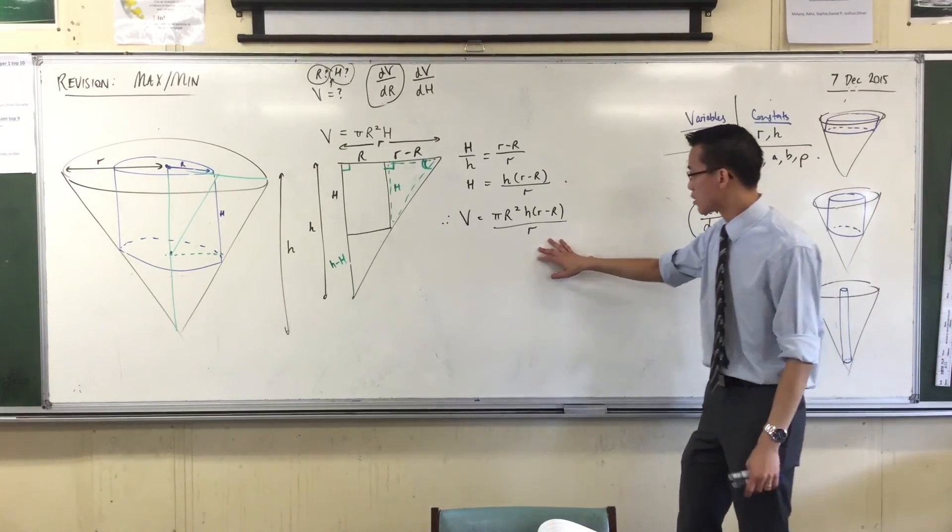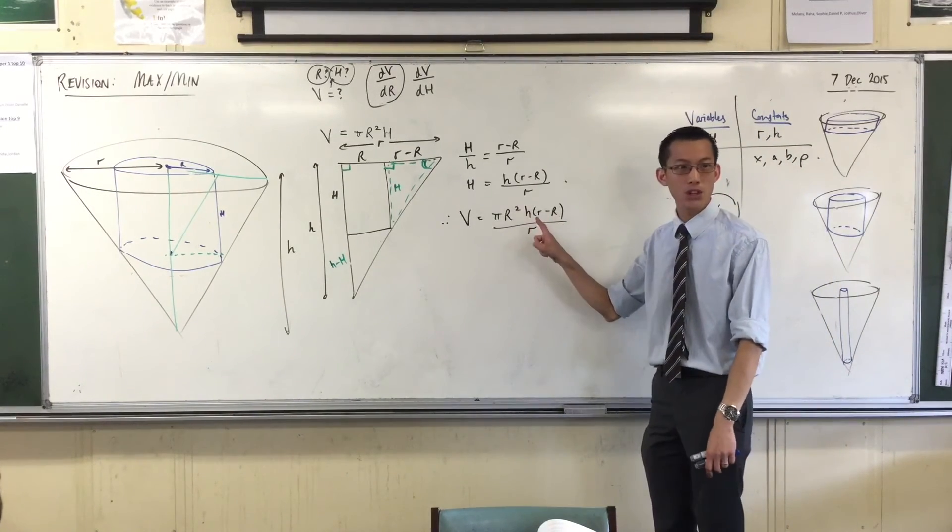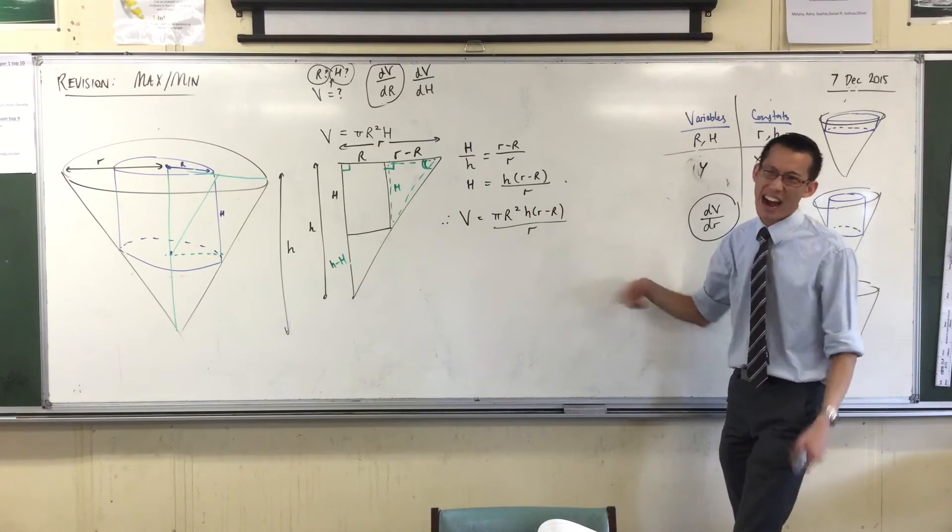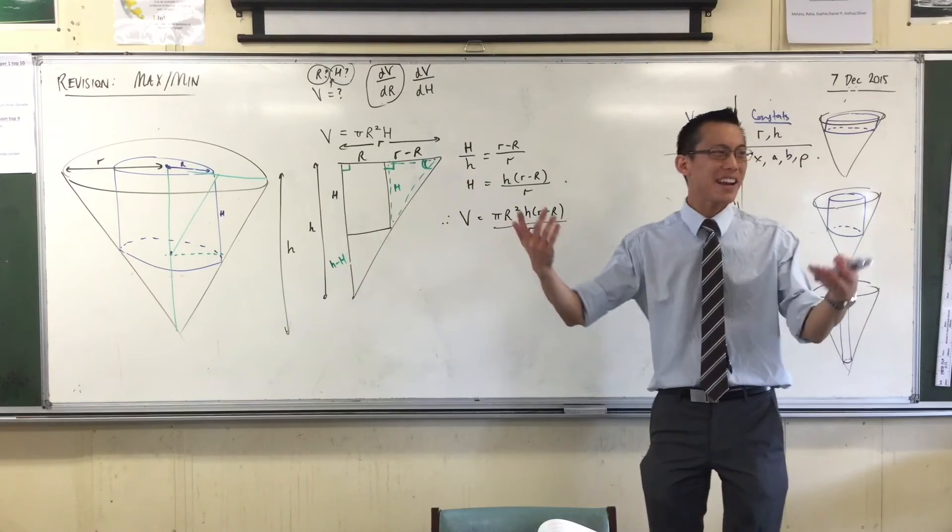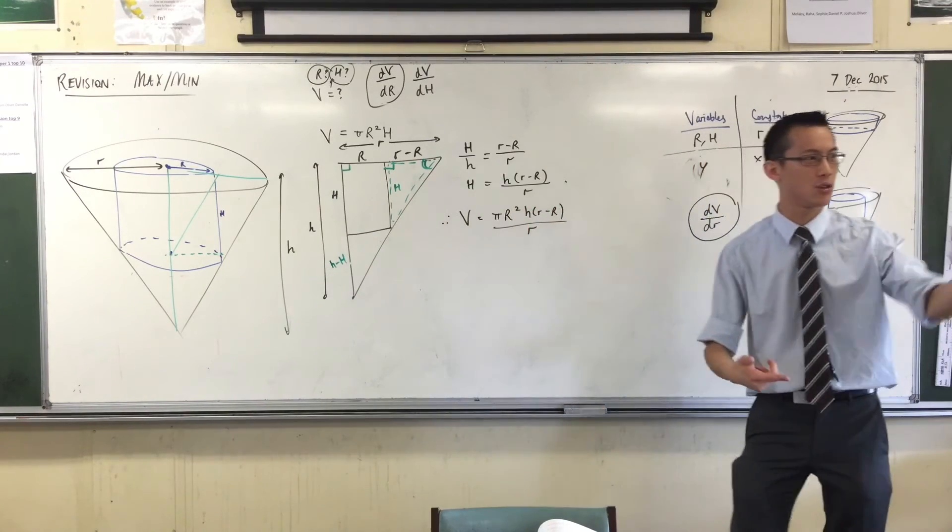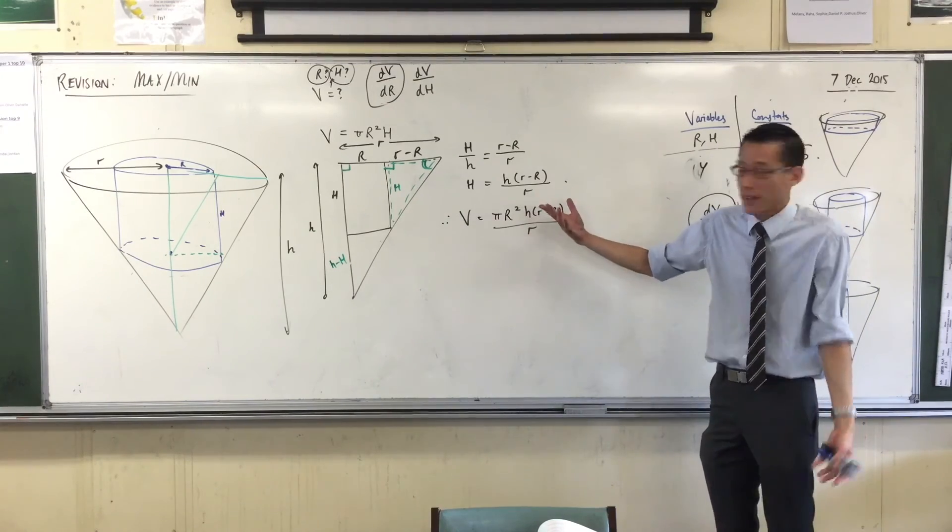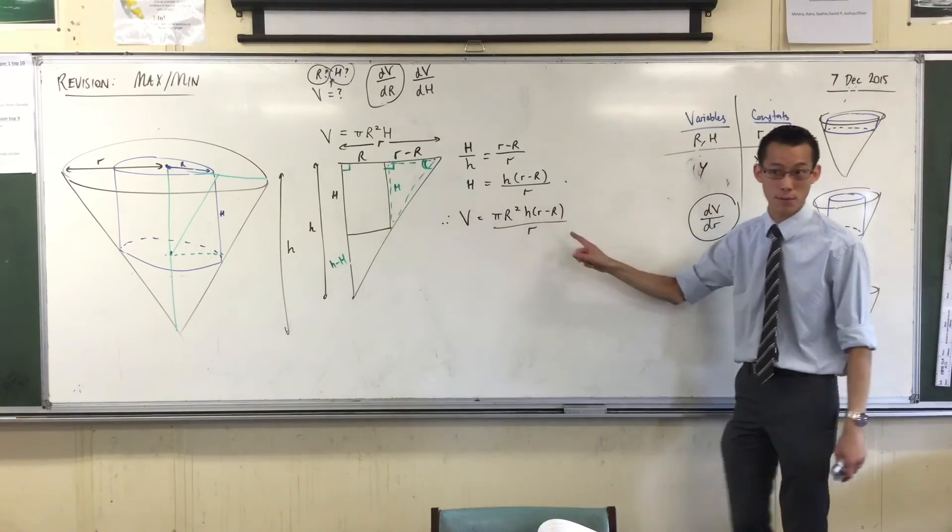So then what I'm left with is this guy up here, which is a product. It's this times this. I could do product rule, but why do product rule when I can reduce it to a polynomial? That's much better. So even though this is fine, this is the answer. This is the volume in terms of the radius. I'm going to do one little thing to make it a little bit neater.